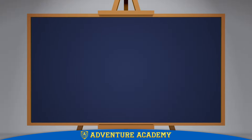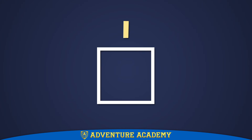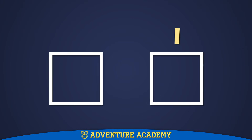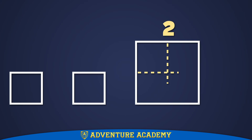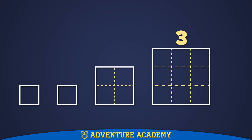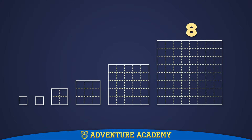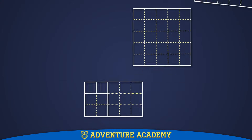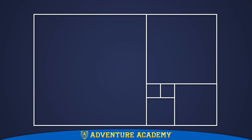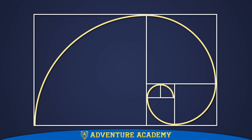You can even draw a picture of the sequence. Outline a one by one square to start the sequence. The next number in the sequence is another one, so you outline that. Then you outline a two by two square, a three by three square, five by five, eight. Now draw a line connecting them all, like this. You get something that winds around the center.